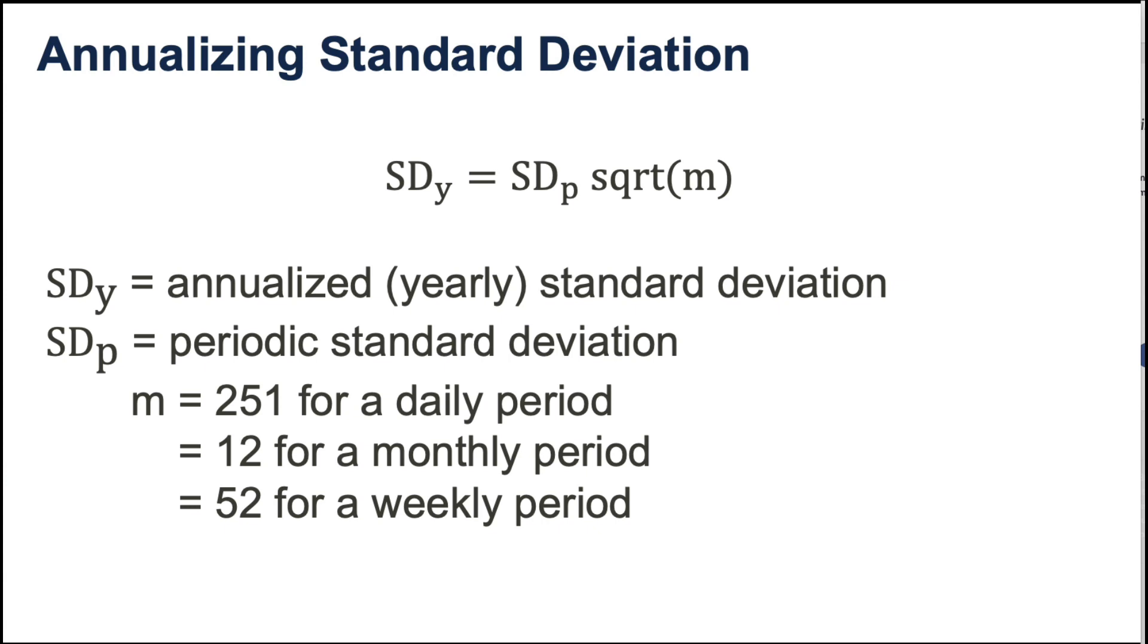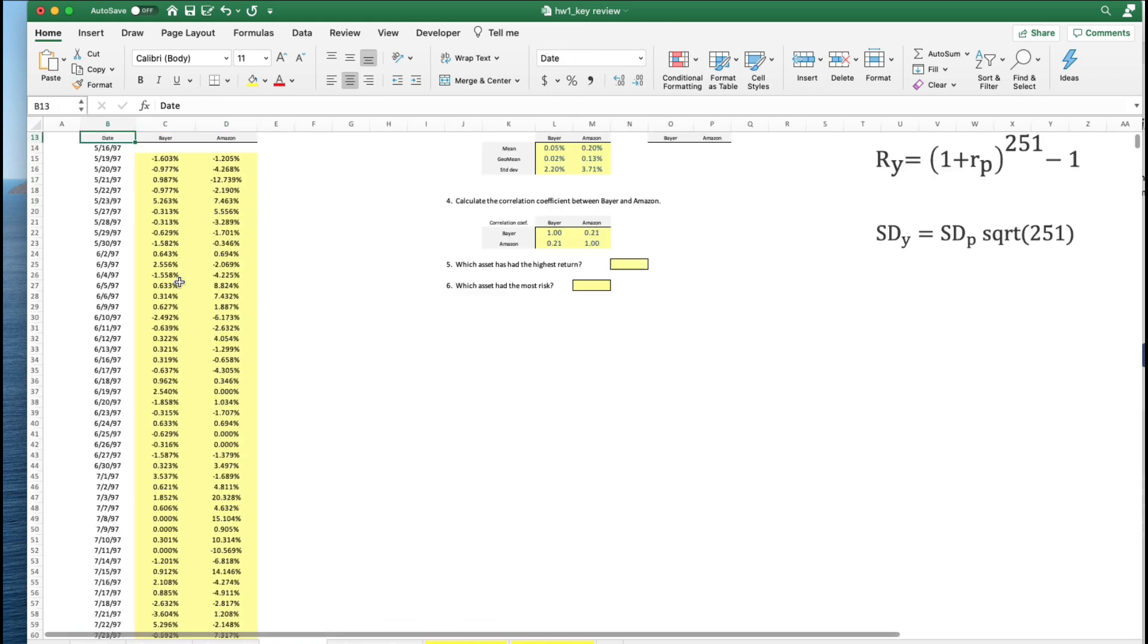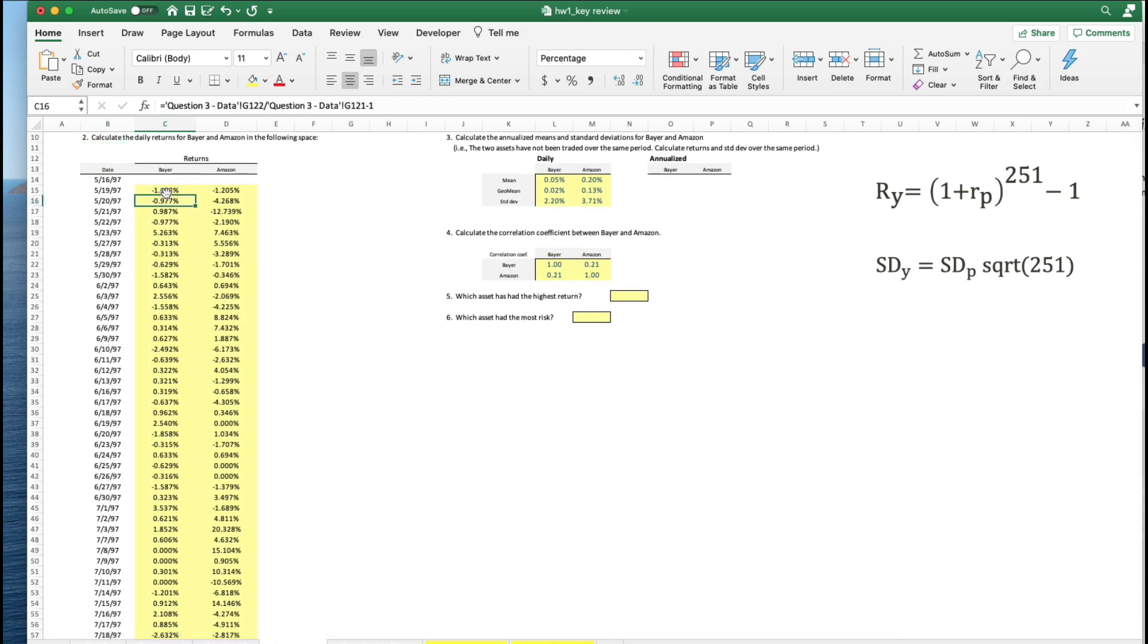Now we're going to apply it in our case. Here is daily data for Bayer and Amazon. And this goes from 1997 to 2020. Here's daily returns. We calculate the mean. We calculate the GL mean. And we calculate the standard deviation for Bayer and Amazon. Those are on a daily basis. Now we want to annualize those. And I'm going to do the annualized return over here. And here for convenience I put our two formulas. Here's how we annualize our means and our standard deviations.